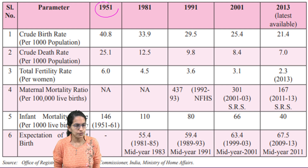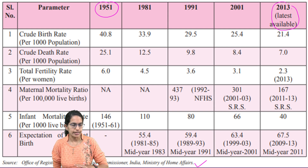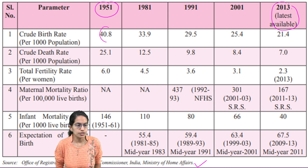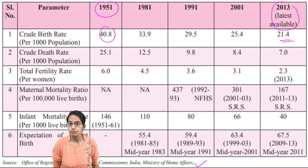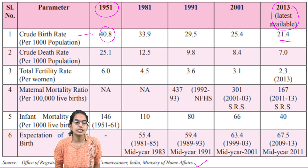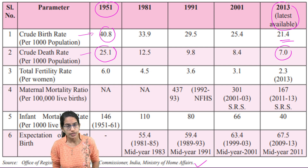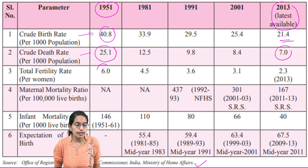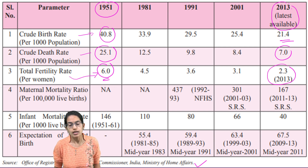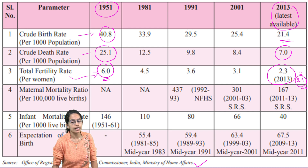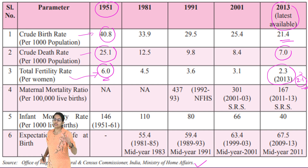Looking at growth rates from 1951 to 2013, the Crude Birth Rate reduced drastically from 40.8 to 21, indicating the population is moving toward a stabilization phase. The Crude Death Rate reduced from 25.1 to 7 — nearly a threefold reduction — indicating strong health infrastructure development. The Total Fertility Rate dropped from 6.0 to 2.3, with a target of 2.1.